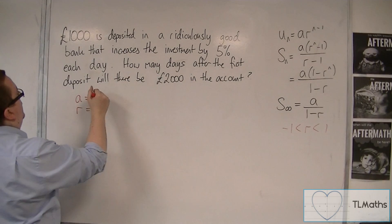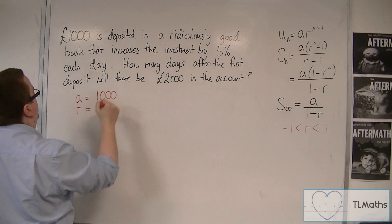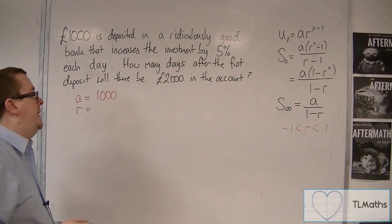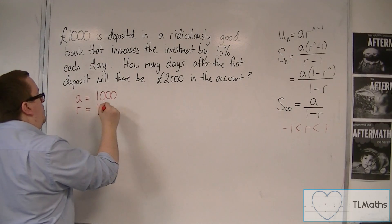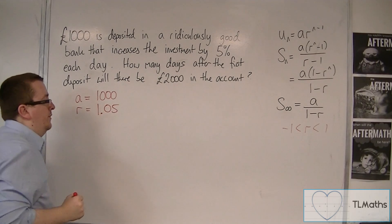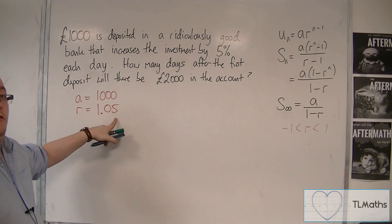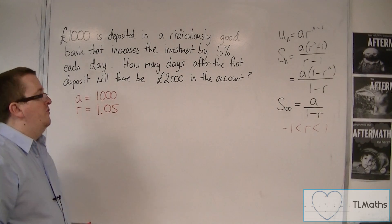So A is £1,000. Now R, because I'm increasing it by 5% each day, that means R is 1.05. One keeps it at its same amount and the extra 0.05 increases it by the 5%.